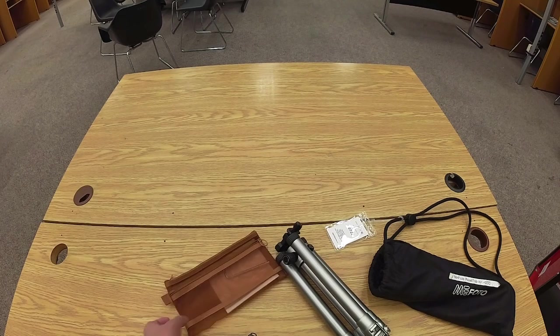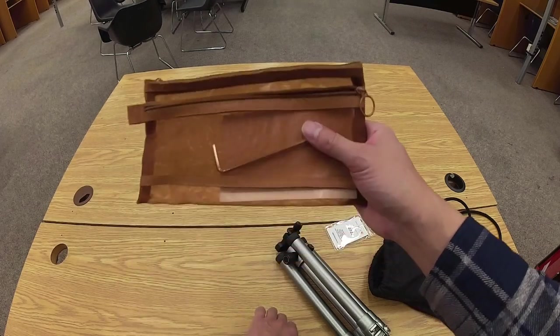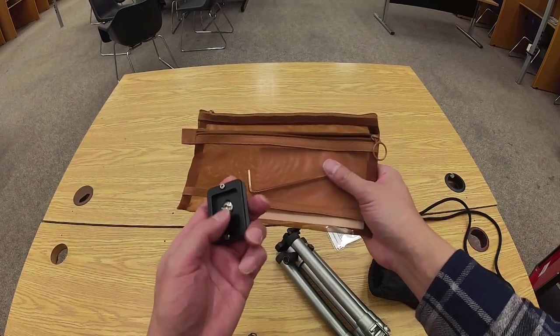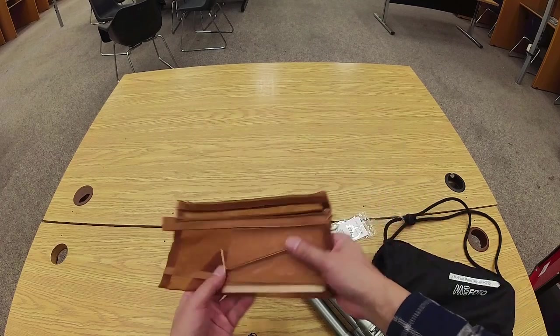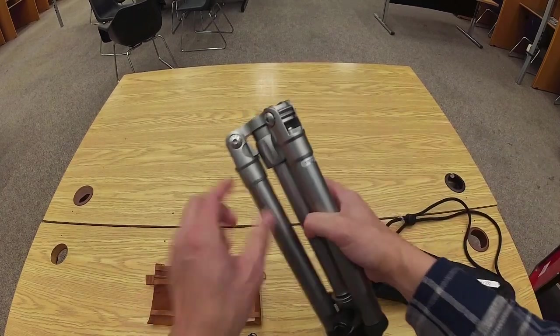Item six is an Allen key, and that is used to tighten the quarter inch screw of the mounting plate as well as the bolts on each of the legs.